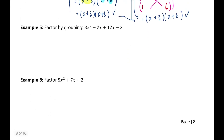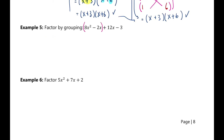Moving on to Example 5: factor by grouping. Last class we covered the simple case where ax squared plus bx plus c has a equal to 1. But here the coefficient in front of x squared is no longer 1. We'll use this example to explain what happens when a is not equal to 1. We're going to group the first two and last two terms together and factor out a common term.